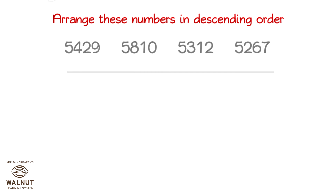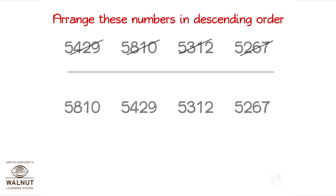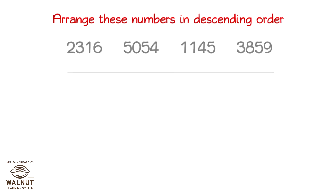You pick the biggest number and place it first, then the next biggest, and then the next one, then place the last one. So, we get the numbers in descending order.